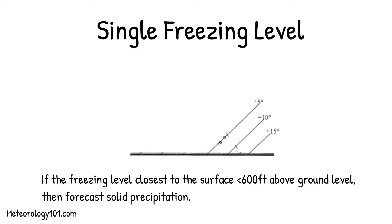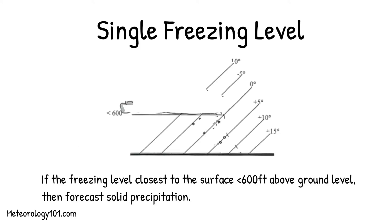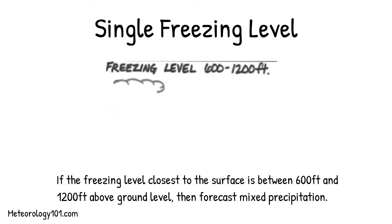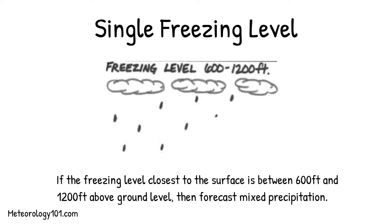If the freezing level closest to the surface is less than 600 feet above ground level, then forecast solid precipitation. If the freezing level closest to the surface is between 600 and 1,200 feet above ground level, then forecast mixed precipitation.